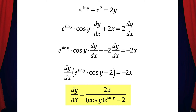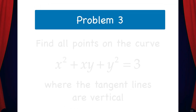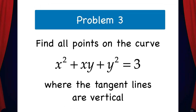Note that I've moved the cosine y term in front of the e to the sine y. This is just a notation convention where we put the exponential term last. Here's another problem to consider: find all points on the curve x squared plus xy plus y squared equals 3 where the tangent lines are vertical.